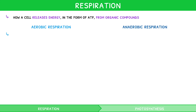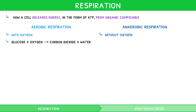Aerobic respiration occurs with oxygen, and anaerobic respiration occurs without oxygen. For aerobic respiration, the word equation is glucose plus oxygen goes to carbon dioxide plus water. The symbol equation for this reaction is C6H12O6 plus 6O2 goes to 6CO2 plus 6H2O. It is important to note that aerobic respiration produces lots of ATP, but this is not shown in these equations.